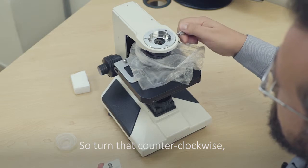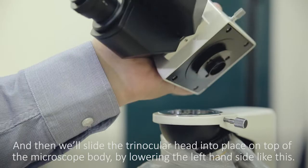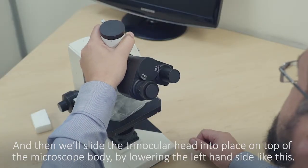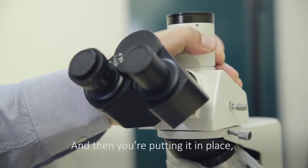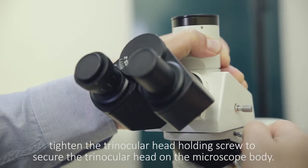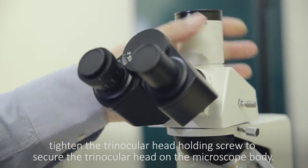Turn that counterclockwise and then we'll slide the trinocular head into place on top of the microscope body, lowering the left hand side like this and then putting it in place. While you're holding it in place, tighten the trinocular head holding screw to secure the trinocular head on the microscope body.